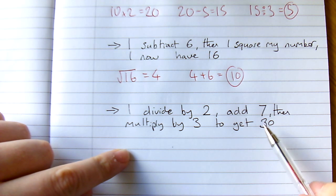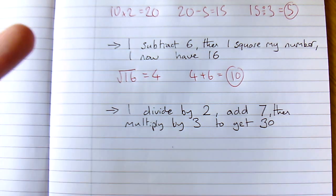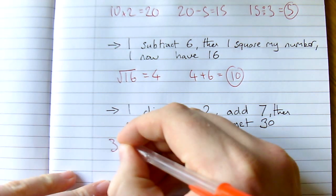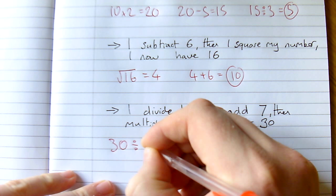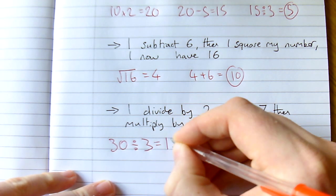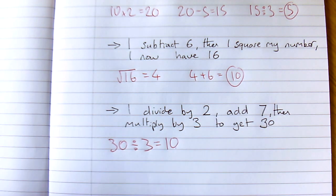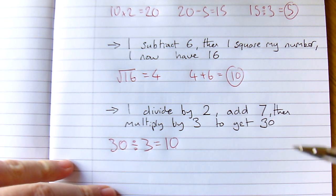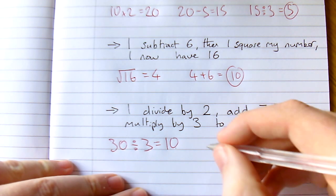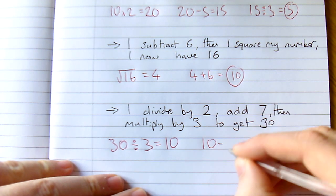My previous step was multiplied by 3, so I need to divide by 3. 30 divided by 3 equals 10. Now the step before that was adding 7, so I now need to subtract 7. 10 subtract 7 is 3.